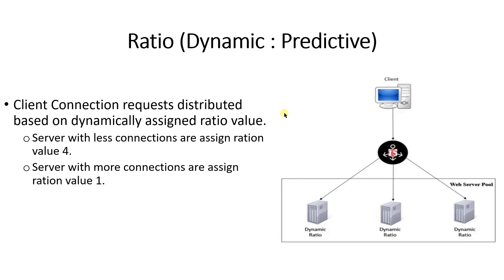Next comes ratio based load balancing dynamic predictive. Client requests are distributed based on a dynamically assigned ratio value, similar to ratio observed. The difference is in the ratio value: in observed, the ratio assigned is three-to-two, whereas in predictive it is four-to-one. This means the server with fewer connections is assigned ratio value four and the server with more connections is assigned ratio value one.